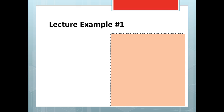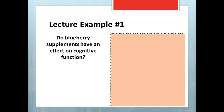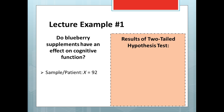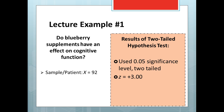Our first lecture example this week asked the question: do blueberry supplements have an effect on cognitive function? To test this question, a nurse practitioner asked one patient — a sample of one person — to take the blueberry supplement for six months. After six months, the patient scored X equals 92 on the Wunderlich Cognitive Ability Test, which measures cognitive functioning. Since this was considered new research, we were not sure what effect or direction blueberry supplements would have on cognitive functioning. Thus, we used a two-tailed hypothesis test at a 0.05 significance level. We calculated a Z of plus three for the sample and made the decision to reject the null hypothesis.